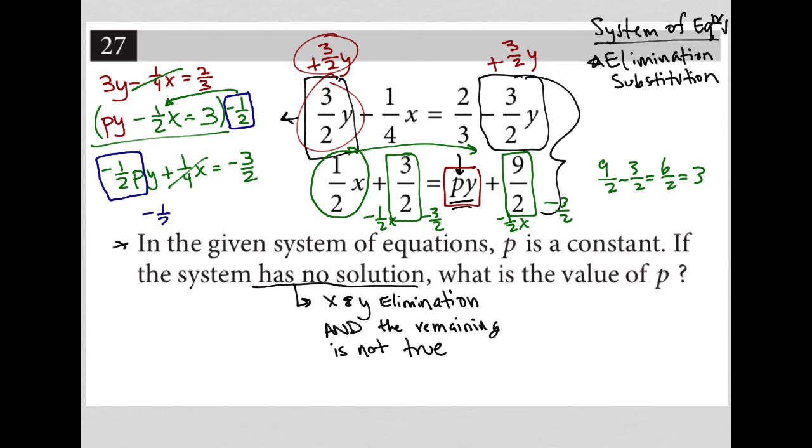So because I know that, that tells me that this negative one half p here has to equal negative three. Because if negative one half p were really just negative three, then it would be able to cancel out with my three Y because I'd have a negative three Y there.